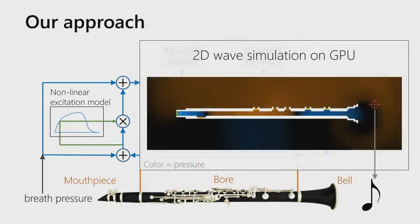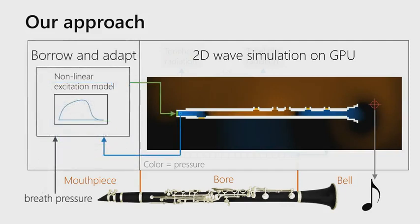Our approach captures all of the radiation and reflection of the bell and bore directly using a direct 2D wave simulation on the instrument geometry. This simplifies the process of constructing the desired instrument characteristics. We then borrow those previous excitation models and adapt them for use in 2D. There are a few things you have to do to get them to work, and the result is the real-time simulation shown here — let's add some tone holes to the simple clarinet instrument from earlier.